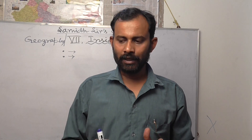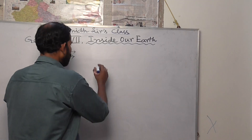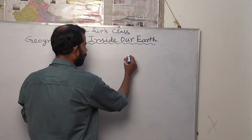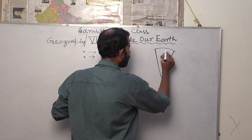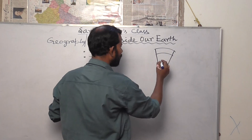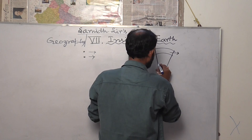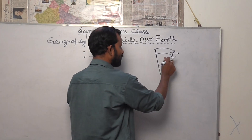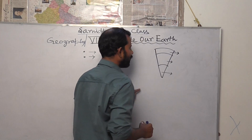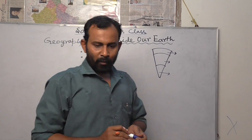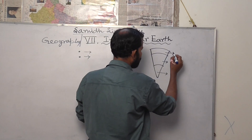The earth has three prominent sections in its interior. I will show this with a diagram. The first one is known as the crust, or lithosphere. The second layer is known as the mantle. And the third one is known as the core.